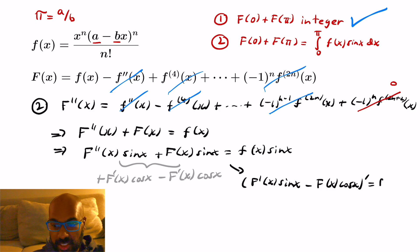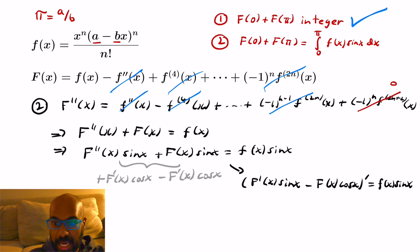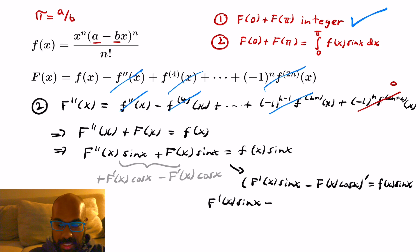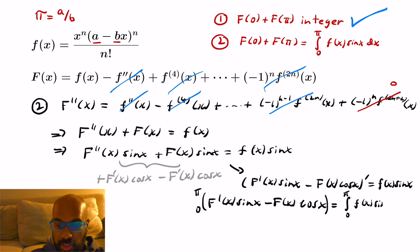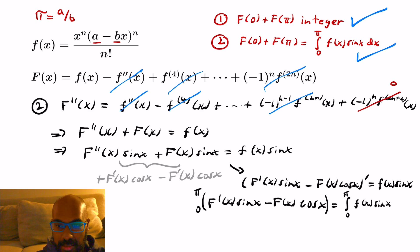The derivative of that expression in parentheses equals f(x) · sin(x), so integrating f(x) · sin(x) from 0 to π is the same as integrating the left-hand side from 0 to π. By the Fundamental Theorem of Calculus, that equals (F' · sin(x) - F · cos(x)) evaluated from 0 to π. Carrying out the evaluation using the values of sine and cosine at 0 and π, we get exactly capital F(0) + capital F(π). So capital F(0) + capital F(π) equals the integral from 0 to π of f(x) · sin(x) dx.